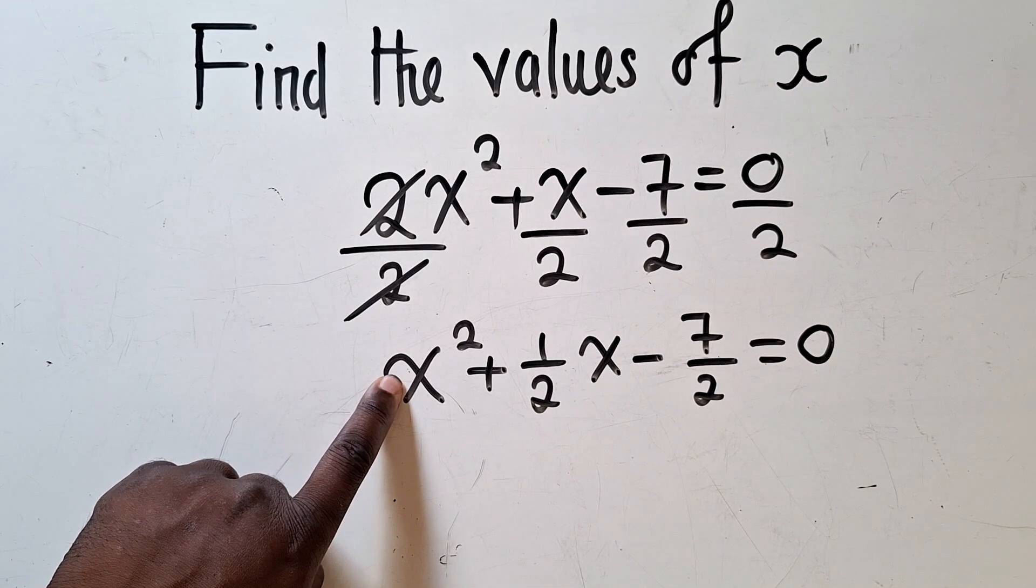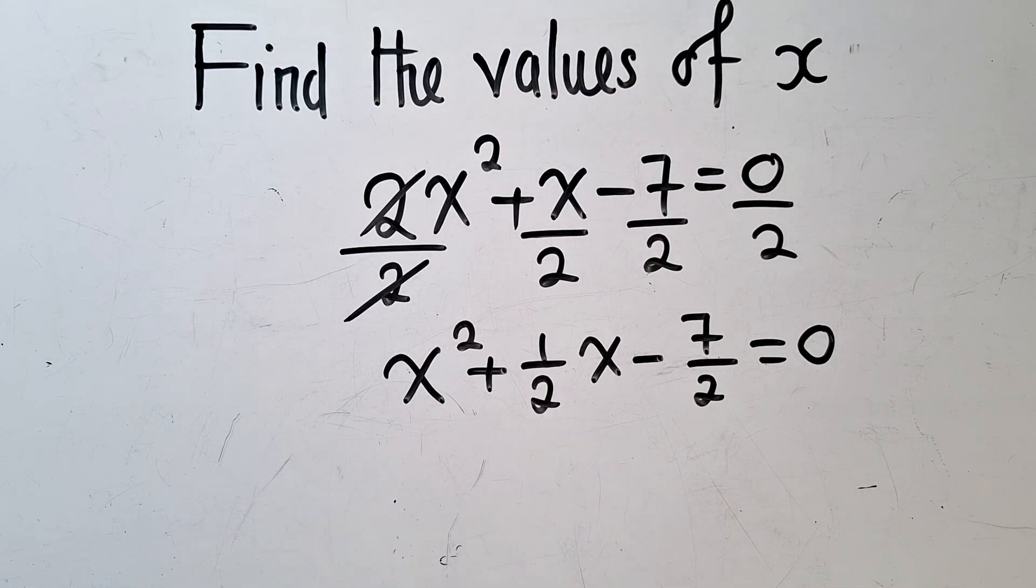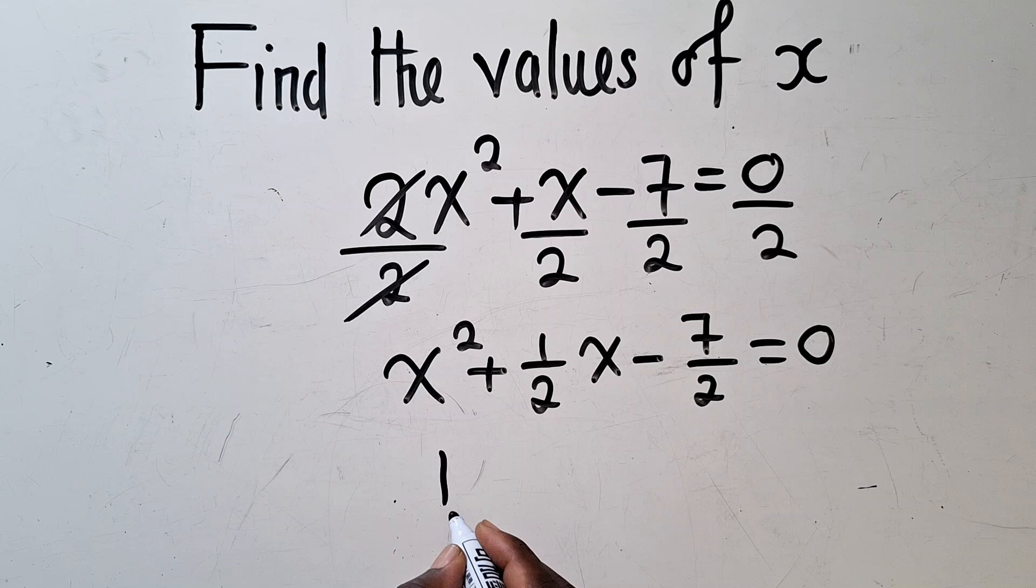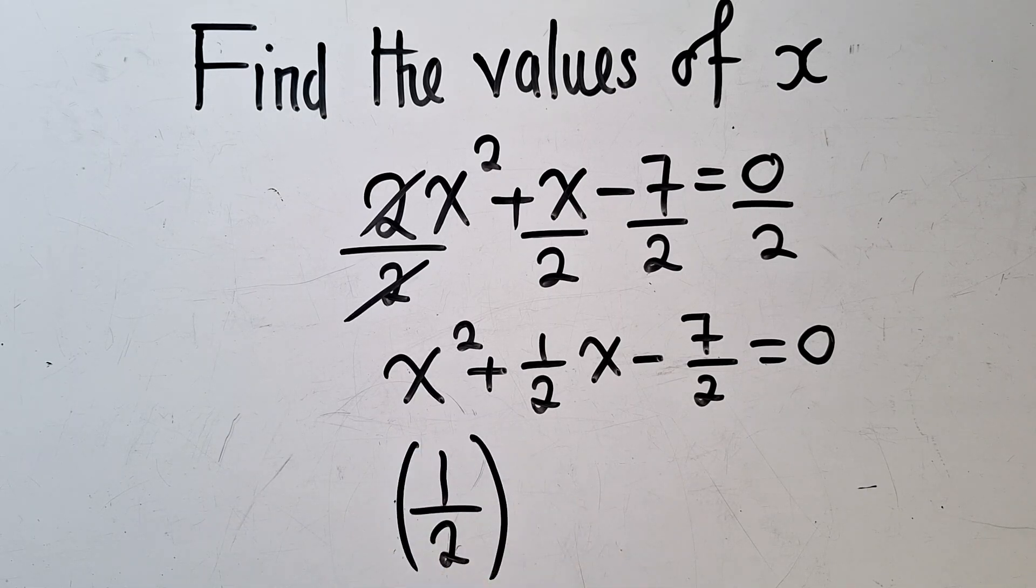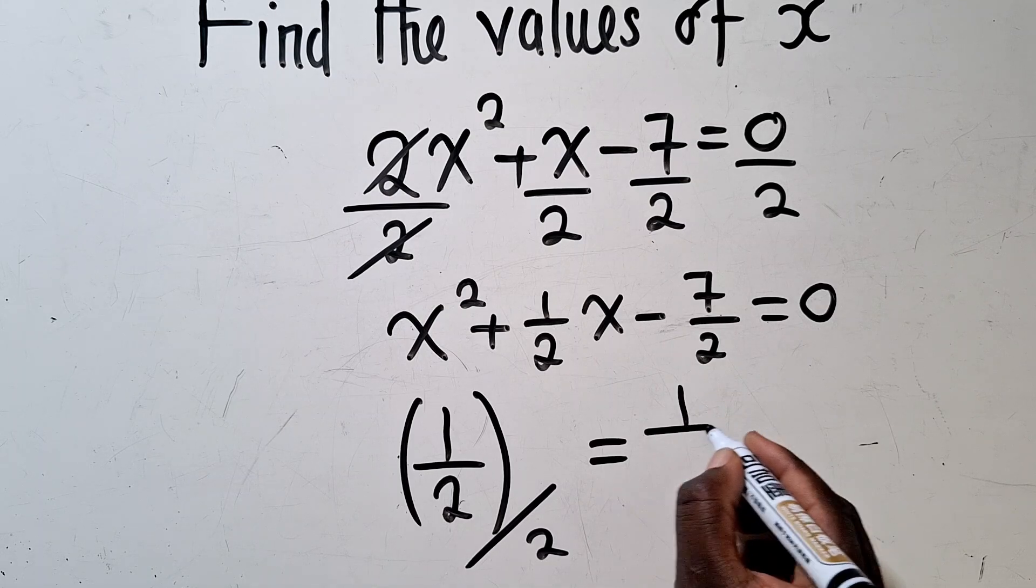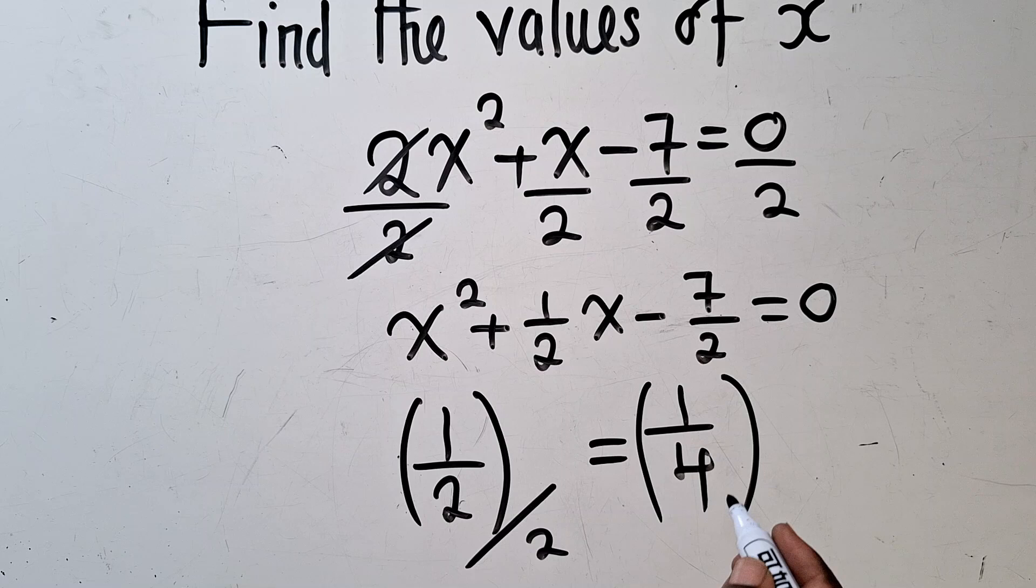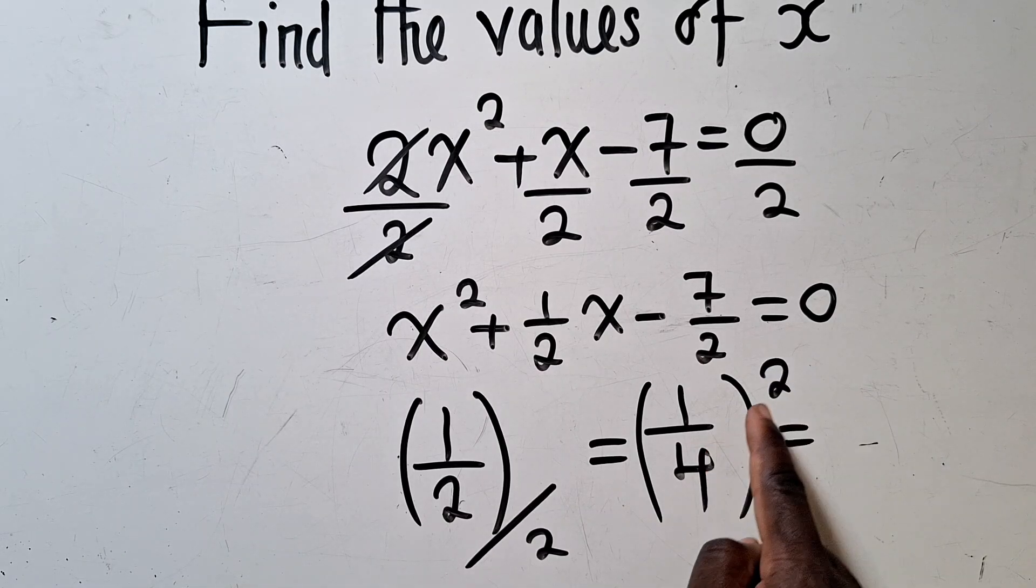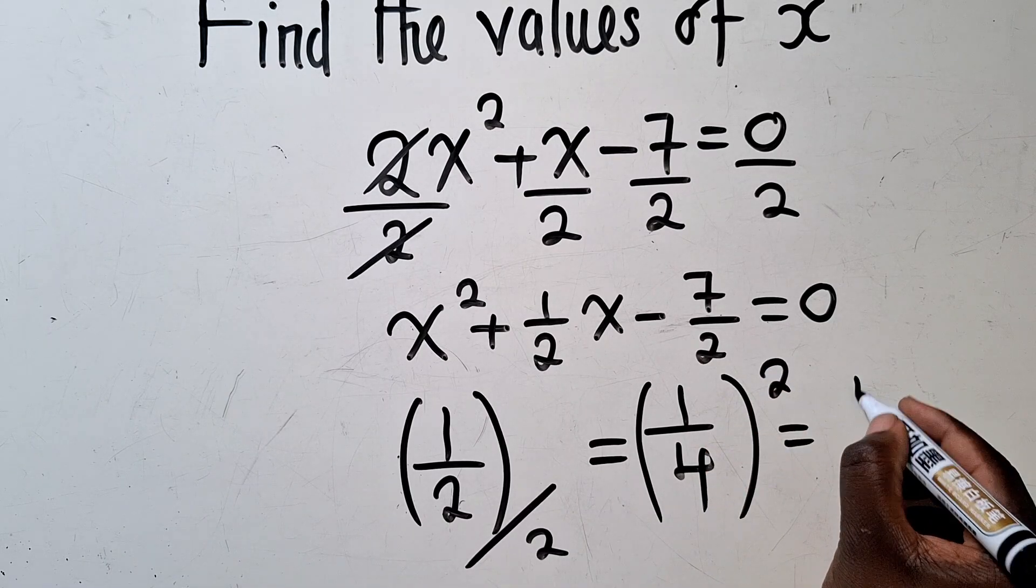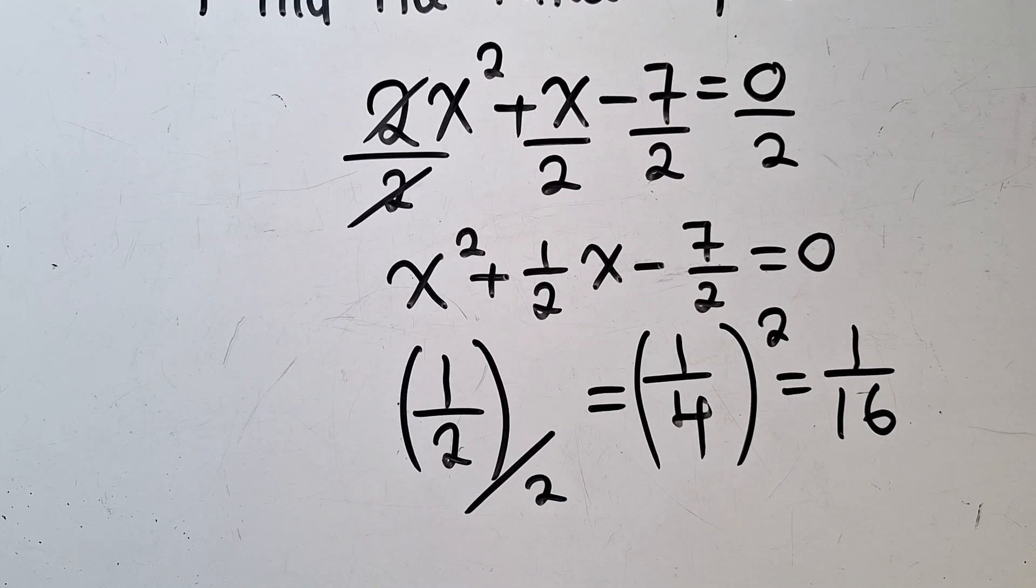When you see that the coefficient here is 1, our a here is 1, you can now pick the b which is 1 over 2. This 1 over 2, divide it by 2. Whichever number is here, divide it by 2. You are getting 1 over 4. When you divide by 2, you get 1 over 4. Apply a power 2 right here, so it will be 1 over 16.